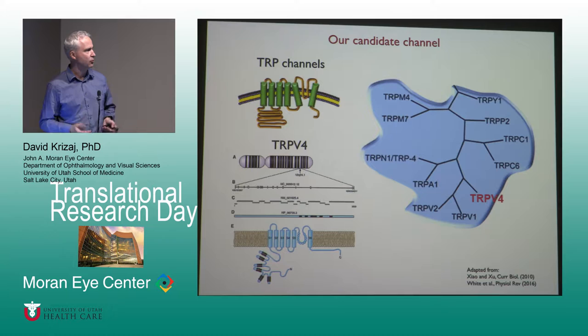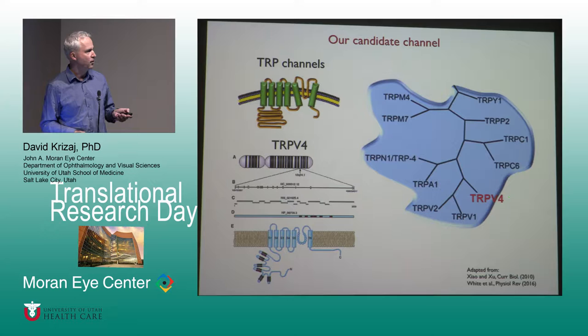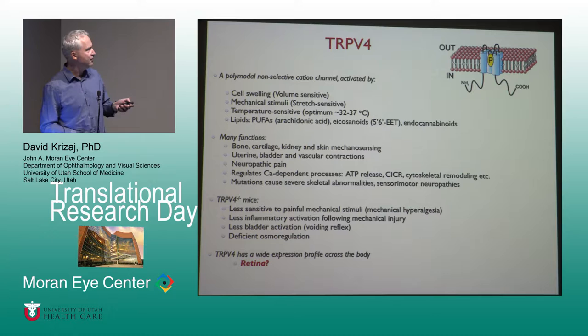We can mimic the glaucoma phenotype simply by activating these channels, and we can protect the retina from hypertension by blocking these channels or by genetically eliminating them from mice. What I'll be focusing on today is a channel called Transient Receptor Potential Vanilloid isoform 4 — TRPV4 — which is a member of a large superfamily of so-called TRP channels. It's a non-selective channel activated by all kinds of mechanical stimuli, from swelling to stretch.